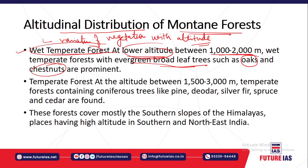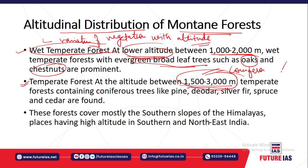These evergreen broadleaf trees are basically oaks and chestnuts, found in the elevation of 1000 to 2000 meters. Then in the altitude of 1500 to 3000 meters, you have mainly temperate forests that are coniferous — cone-shaped trees.